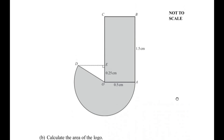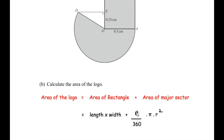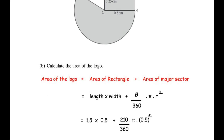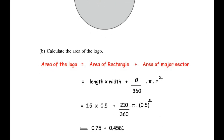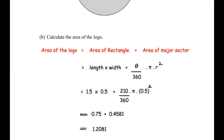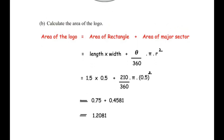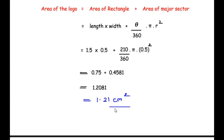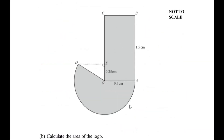The length is 1.5 and width is 0.5 for the rectangle. The central angle theta is 210 degrees and radius is 0.5 for the sector. Substituting: 1.5 times 0.5 plus 210 over 360 times π times 0.5 squared. This gives 0.75 plus 0.4581, totaling 1.2081, which rounded to two decimal places is 1.21 centimeters squared — the area of the given logo.